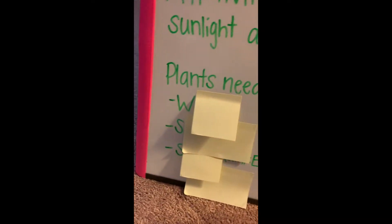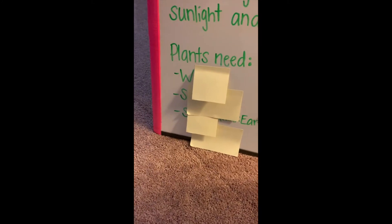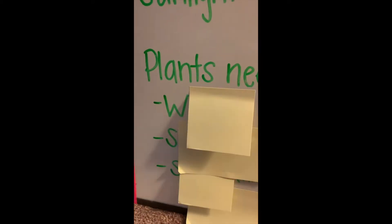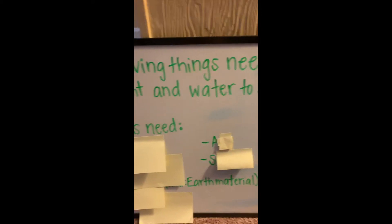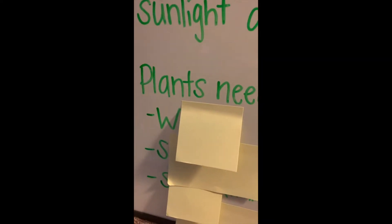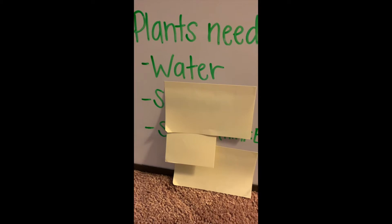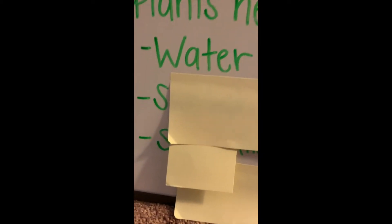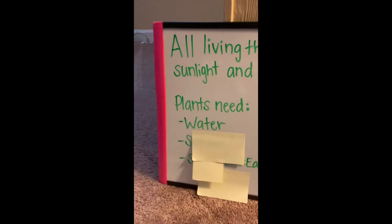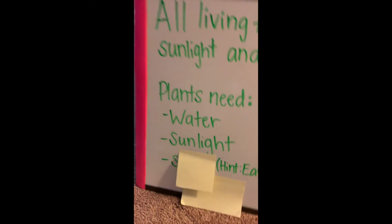There are some other things that plants need. I have here all the things that plants need to survive, so we're going to try to figure out what they are. This first one starts with a W — what did we already find out that all living things need to survive? Plants are living things, so what do they need that starts with a W? Water. We knew that one. What about this other one that starts with an S? What's another thing that all living things need to survive? Sunlight — I bet you guys got that one.